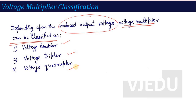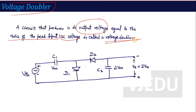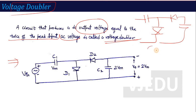Let's look at the Voltage Doubler first. The Clamper concept is applied here in the Voltage Multiplier. The output voltage is equal to twice the peak input AC voltage — that is called the Voltage Doubler circuit. In the circuit, there is an input voltage, one capacitor-diode combination (CD) and another diode-capacitor combination (DC). This CD and DC arrangement produces the Voltage Doubler output.